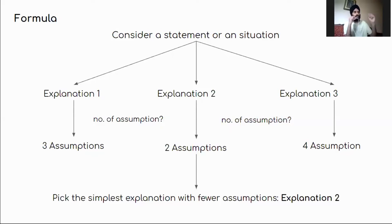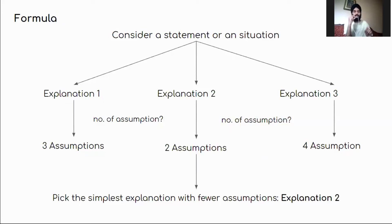For example, explanation one has three assumptions, explanation two has two assumptions, and explanation three has four assumptions. According to the principle, we have to go with the simplest explanation with the fewest assumptions — in this case, explanation number two, which has the fewest assumptions.